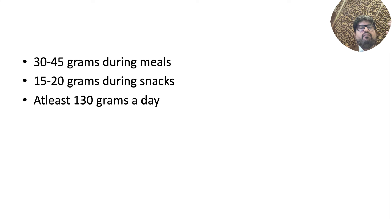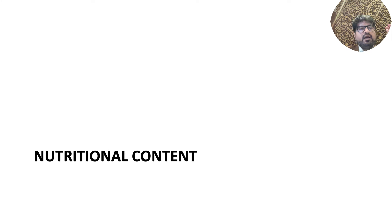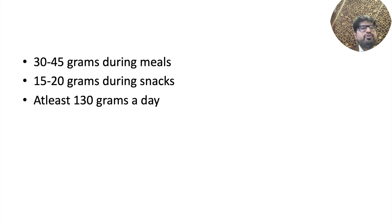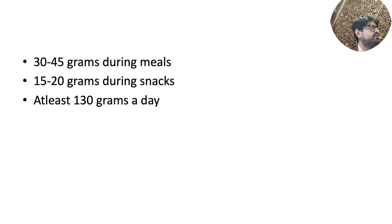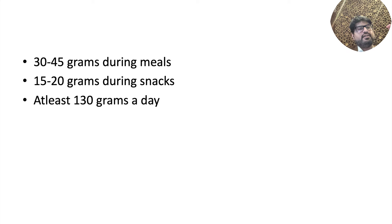We suggest 30 to 45 grams of carbohydrate during major meals and about 15 grams during snacks, with typically 130 grams of carbohydrate total. It is not just important to maintain the same amount of carbohydrate, but also to maintain similar glycemic index. You can't say 15 grams of carbohydrate where the patient has barfi - that is not going to work. The same amount and type of glycemic index should be maintained, especially in hospitals and type 1 patients.